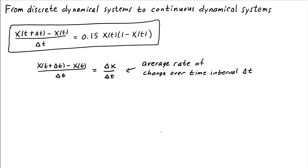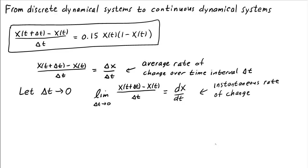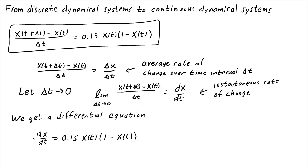What happens to this rate of change as we make delta t smaller and smaller? In fact, let's let delta t get arbitrarily close to zero. In this limit, as delta t goes to zero, the average rate of change becomes the instantaneous rate of change, which is how we define the derivative. So just by letting our time interval delta t get smaller and smaller, our discrete dynamical system — which we might call a difference equation — ends up getting a derivative, and so it ends up becoming a differential equation.